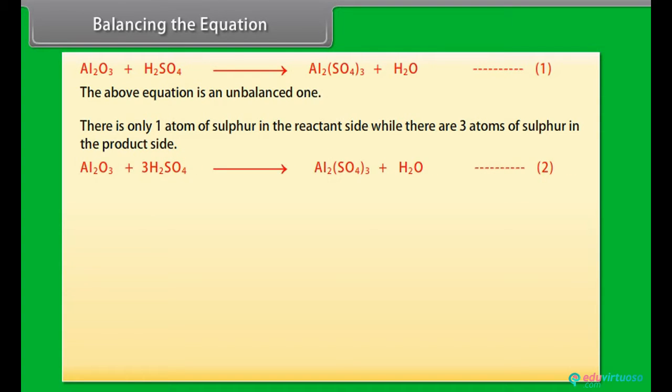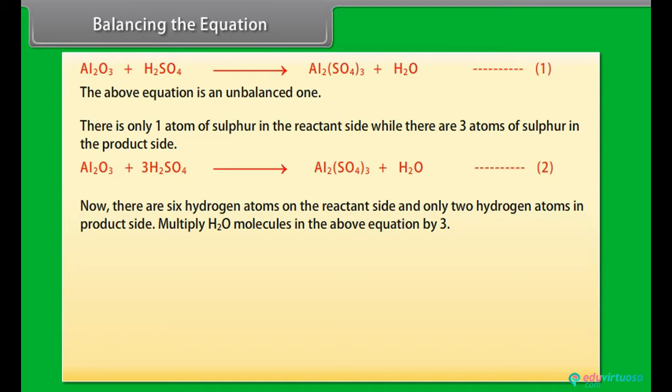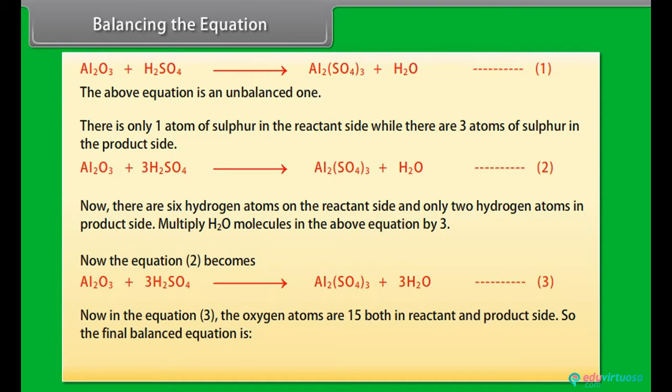Al2O3 plus 3H2SO4 gives Al2(SO4)3 plus H2O. Equation 2. Now there are 6 hydrogen atoms on the reactant side and only 2 hydrogen atoms in product side. Multiply H2O molecules in the above equation by 3. Now the equation becomes Al2O3 plus 3H2SO4 gives Al2(SO4)3 plus 3H2O, which is equation 3. Now in equation 3, the oxygen atoms are 15 both in reactant and product side. So the final balanced equation is Al2O3 plus 3H2SO4 gives Al2(SO4)3 plus 3H2O.